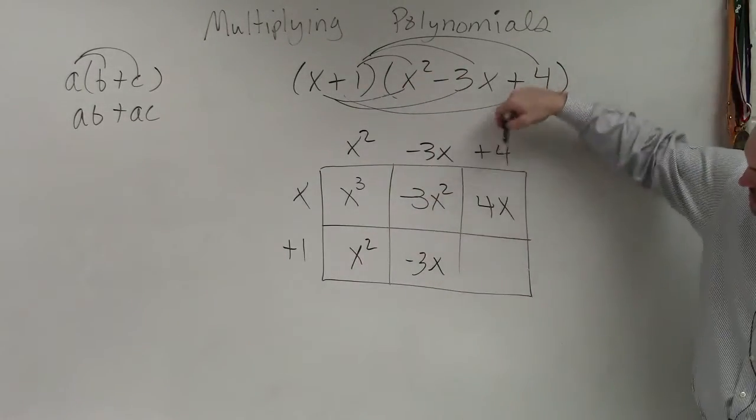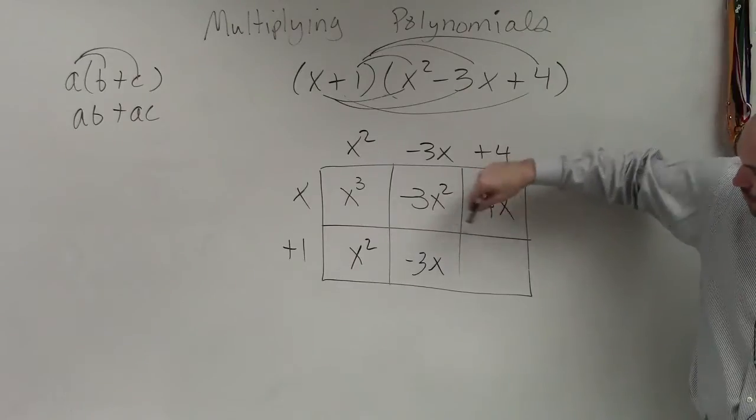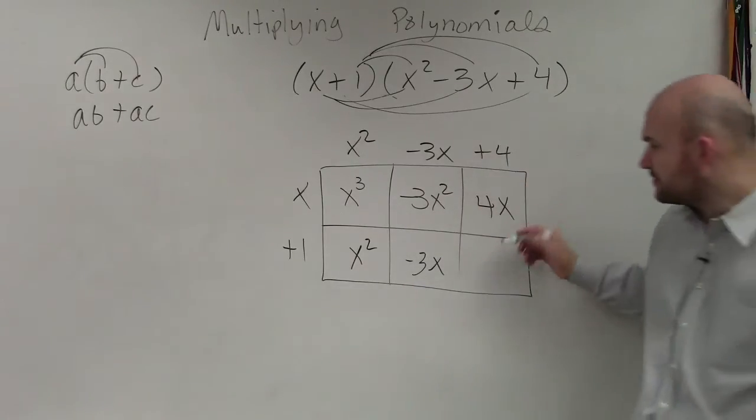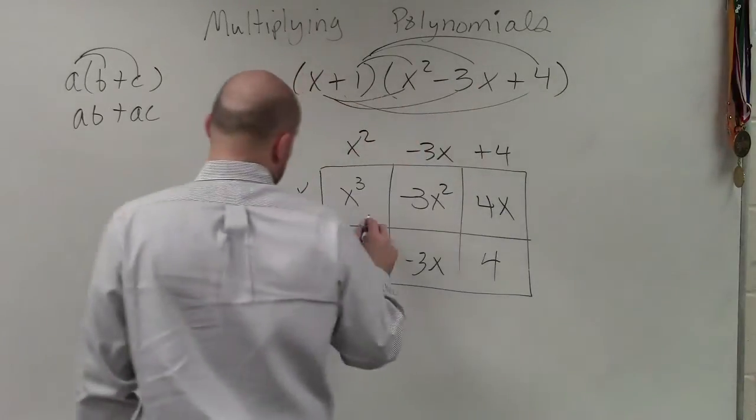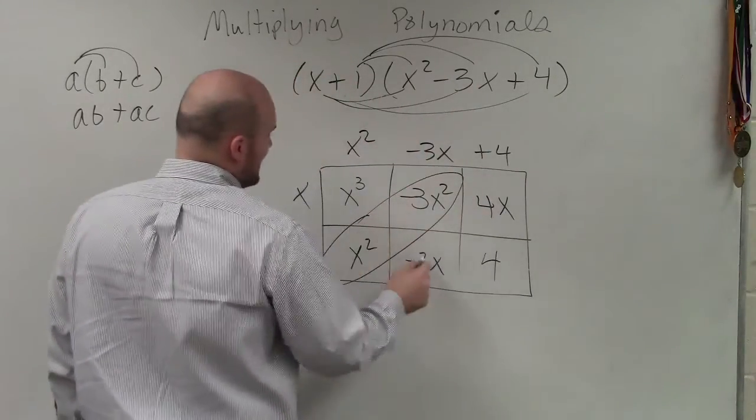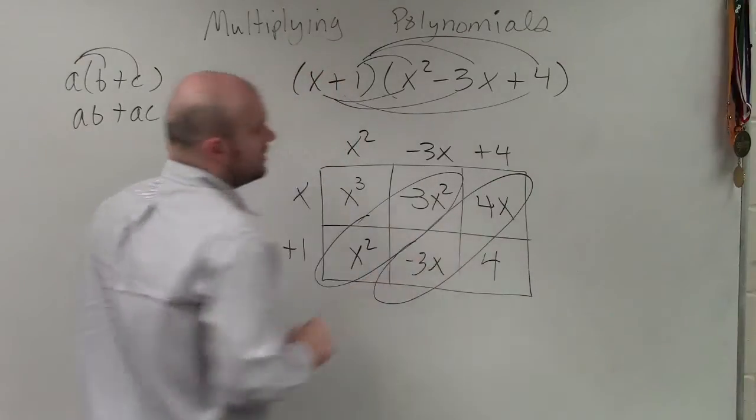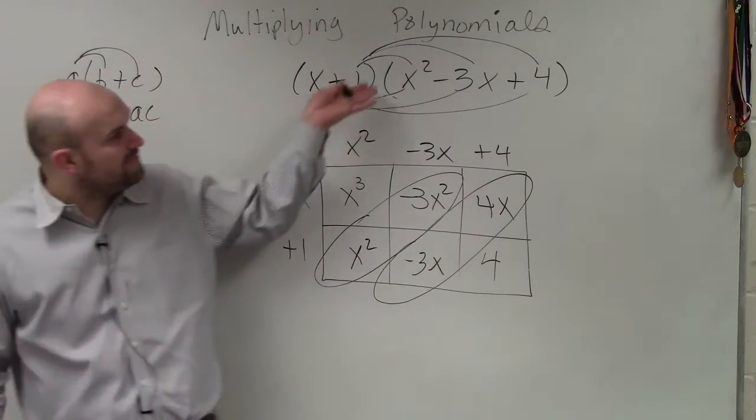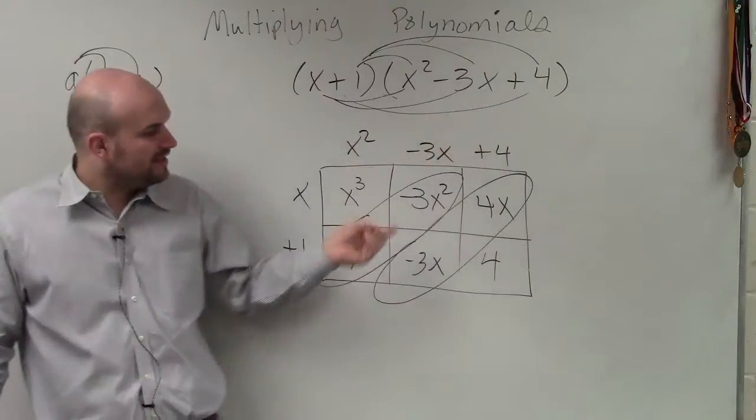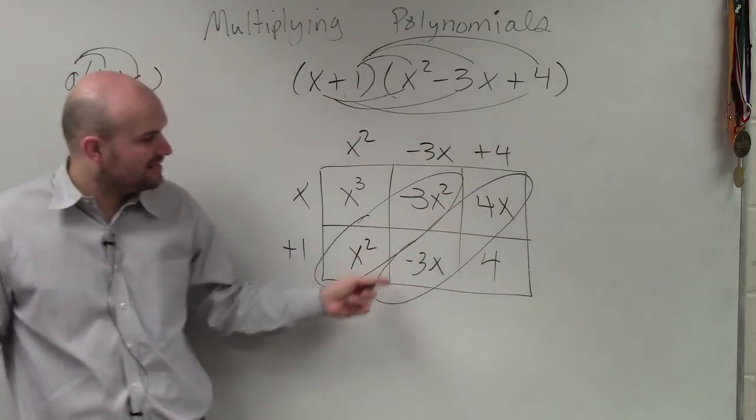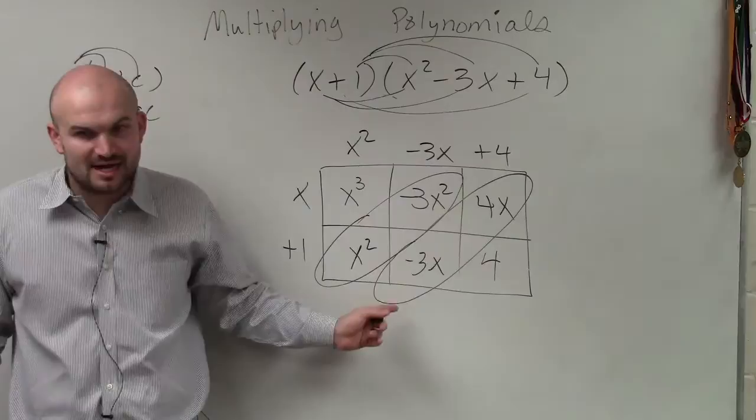Again, I'm trying to find the area of this. So this width is 4, the length is 1. So 4 times 1 is 4. And what's nice about this method is you guys can see that when you're trying to combine your like terms, as long as you have your polynomials ordered, then your like terms combine on the diagonal.